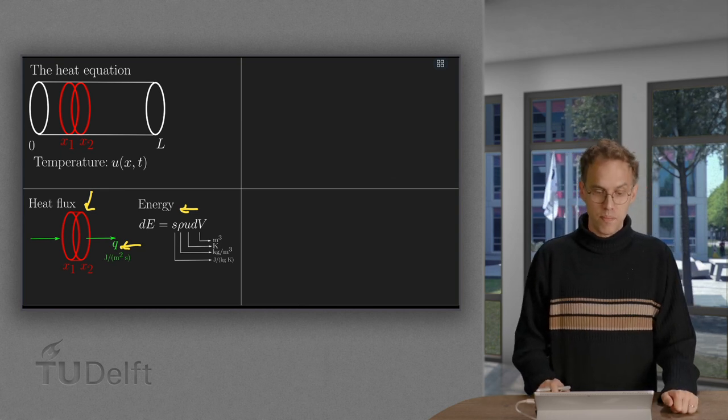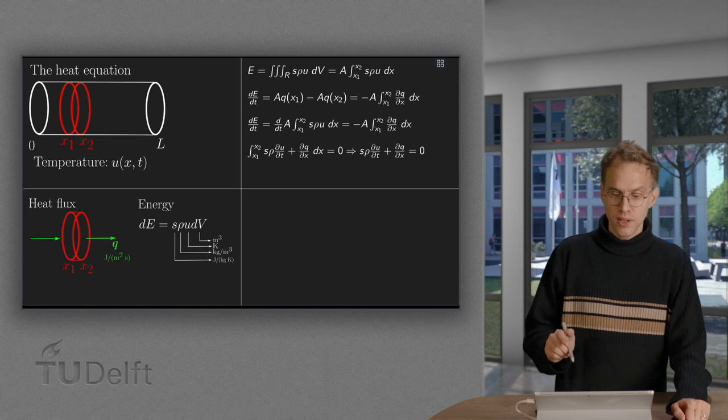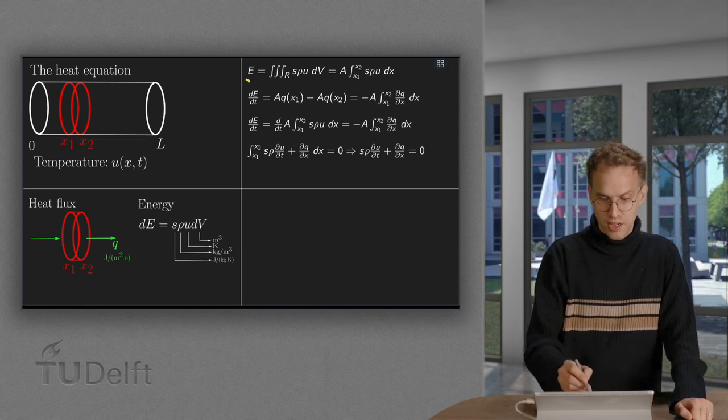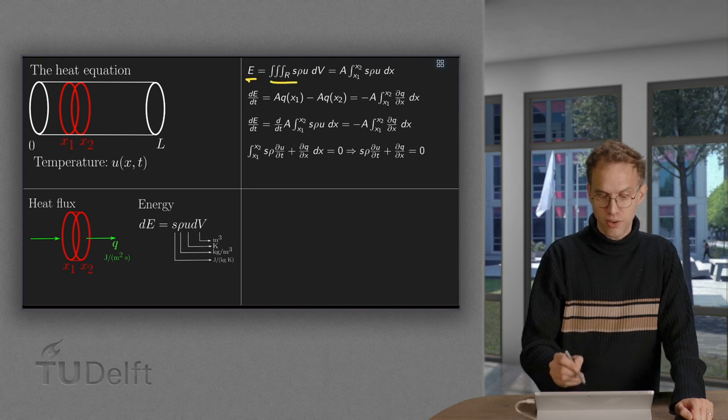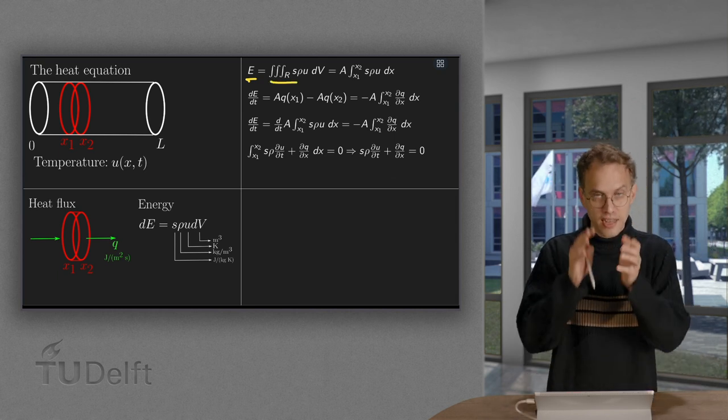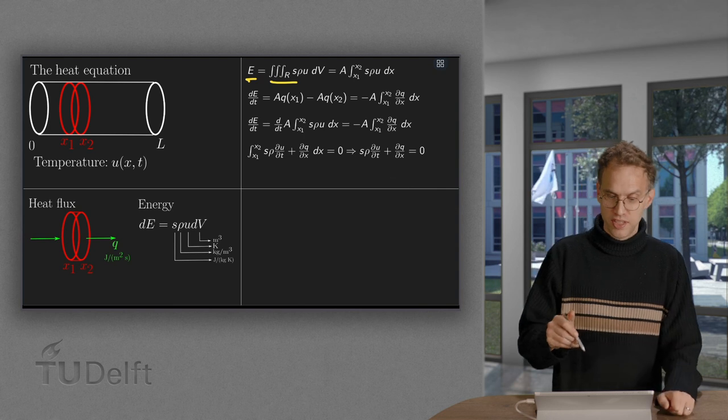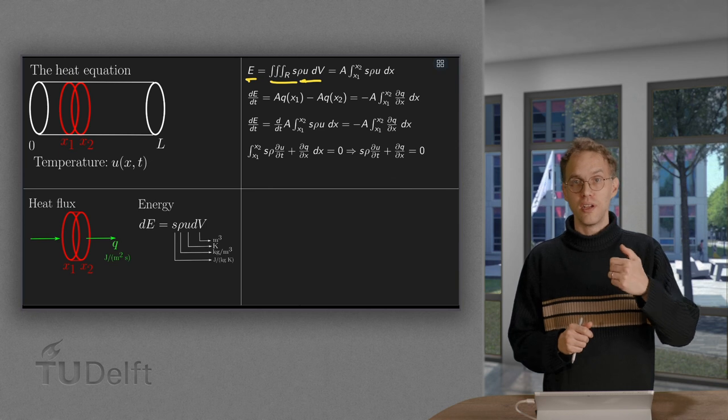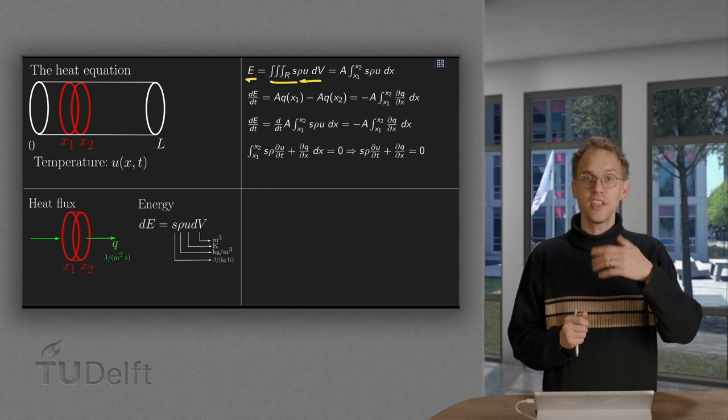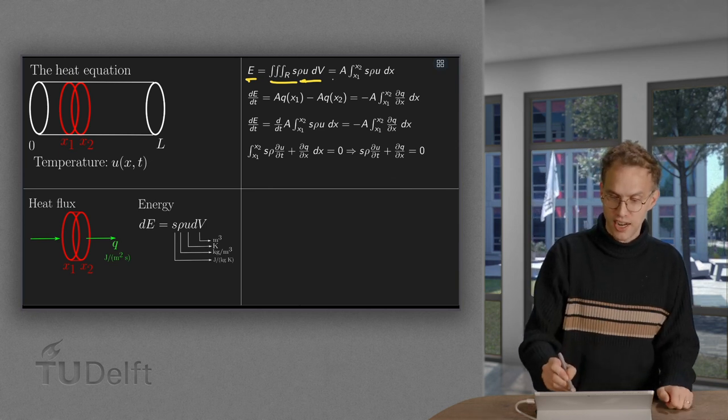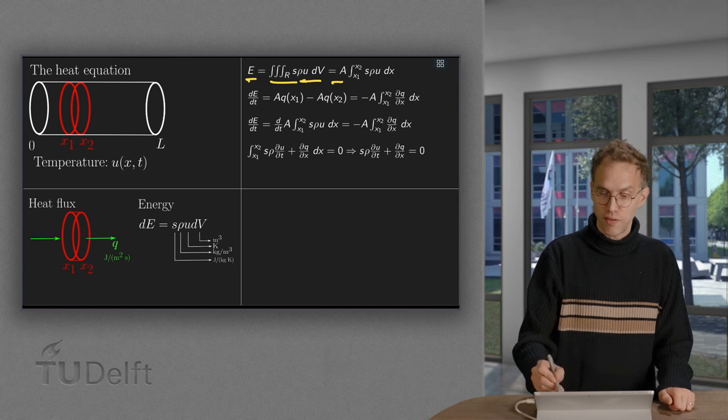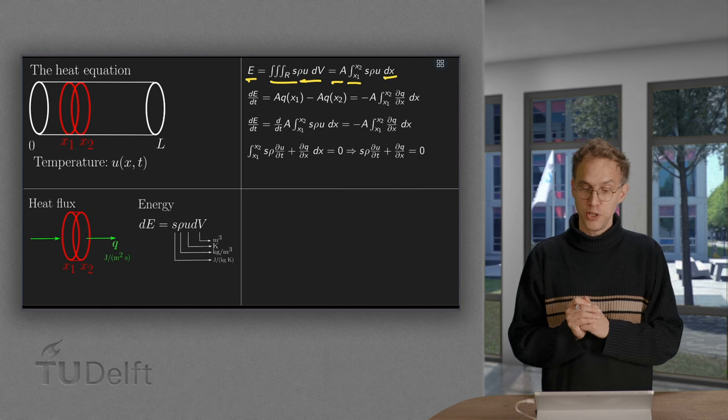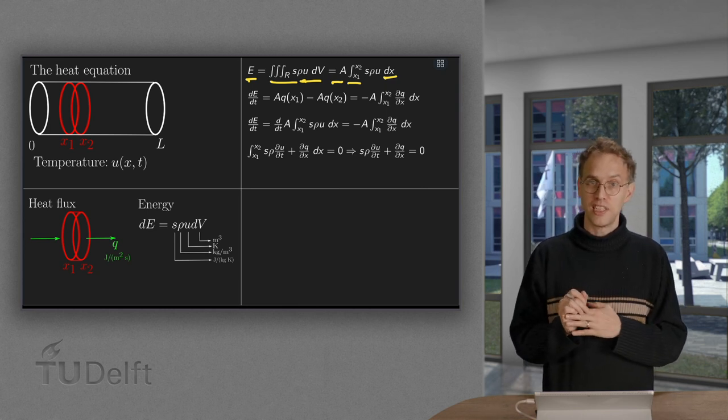Now, we can make a balance, because the total energy is the triple integral over the entire segment of the dE, which was S rho U dV. Well, it's symmetric along the Y and Z directions, that just gives us the area A, and we are left with the integral over X from X1 to X2 of S times rho times U. So, that's the total amount of energy.